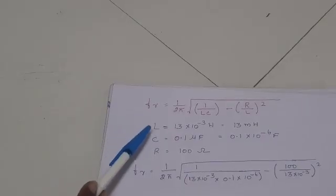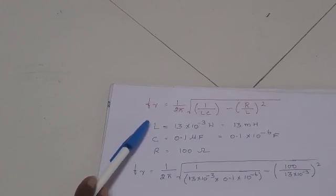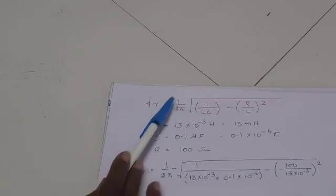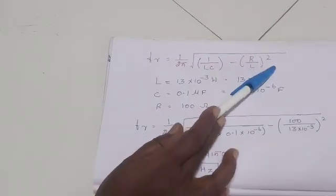Dear students, in this video, I would like to show the calculation for LCR parallel circuit. The formula required for this calculation is Fr equals 1 by 2 pi root of 1 by LC minus R by L whole square.